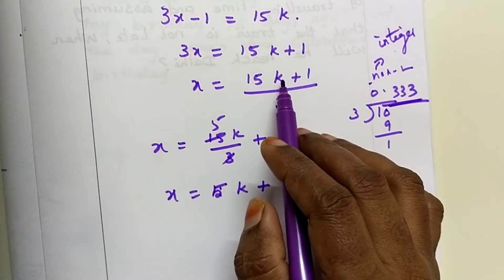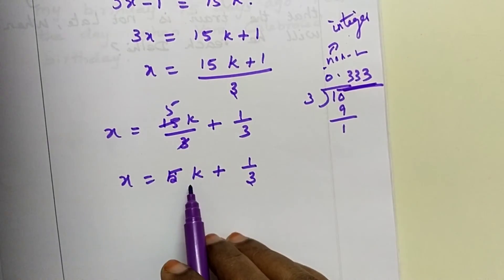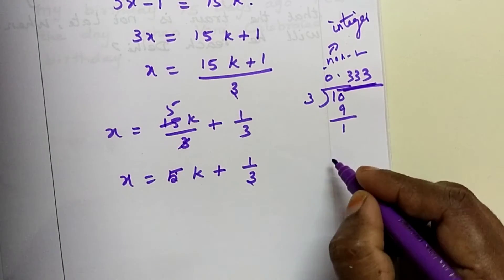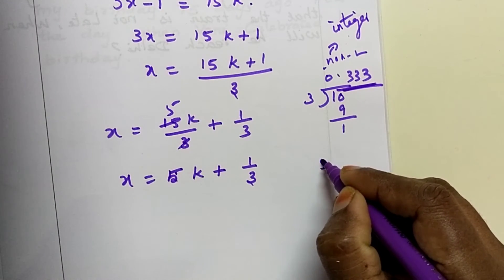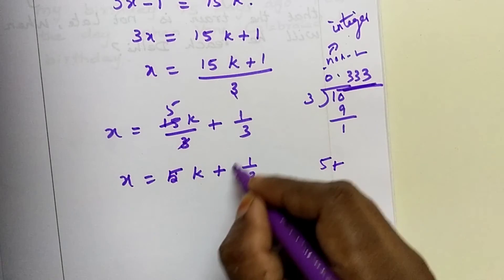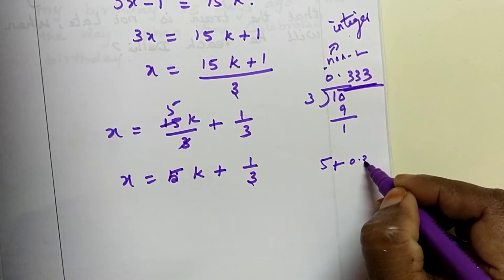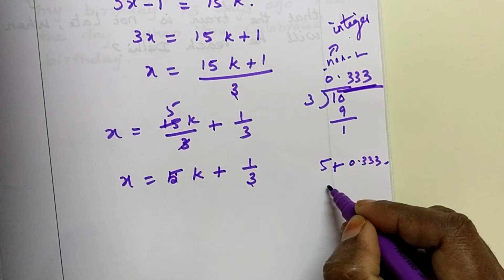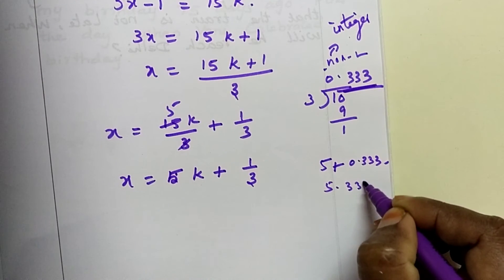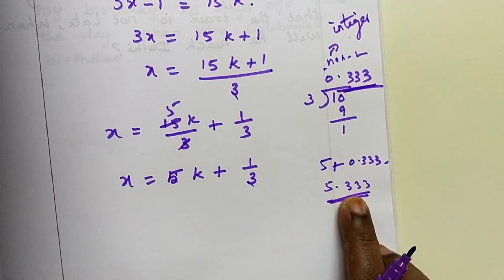See one example. For k, if you substitute 1, you will get 5 times 1, which is 5, plus this 1 by 3, which is 0.3333 etc. If you add, you will get 5.3333. See, is this an integer? No. This is a decimal.